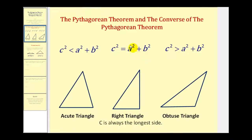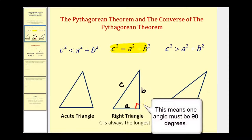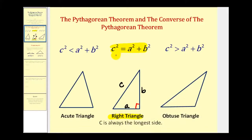Let's start by reviewing the Pythagorean Theorem, which states that c squared is equal to a squared plus b squared, where c is the hypotenuse or the longest side, and a and b are the lengths of the two legs. If we know the lengths of these three sides and c squared equals a squared plus b squared, we have a right triangle. We can also use the relationship between c squared and the sum of a squared and b squared to determine if we have an acute or obtuse triangle.